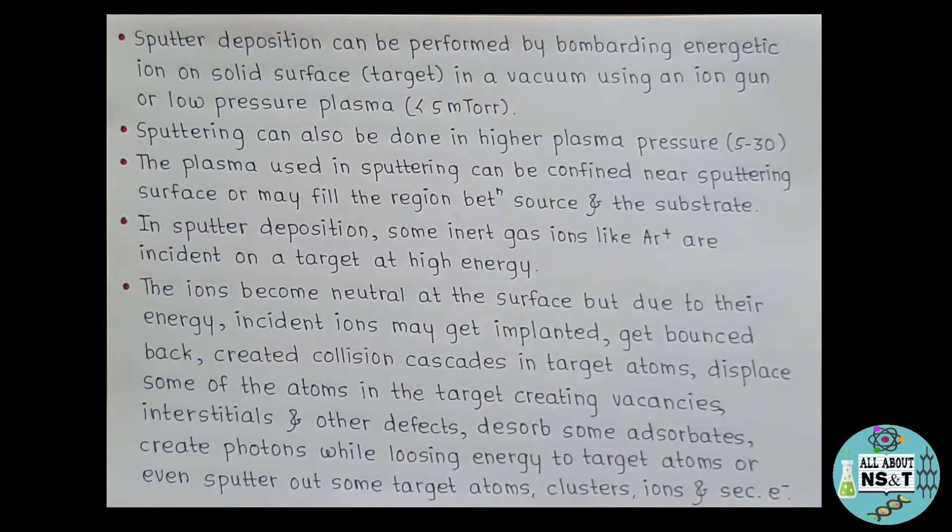The plasma used in sputtering can be confined near the sputtering surface or may fill the region between source and the substrate. So to those who don't know what plasma is, you people can simply understand that plasma is an ionized gas. And what does this ionized mean? Ionized means at least one electron is not bound to an atom or molecule, which in turn leads to the conversion of these atoms or molecules into positively charged ions.